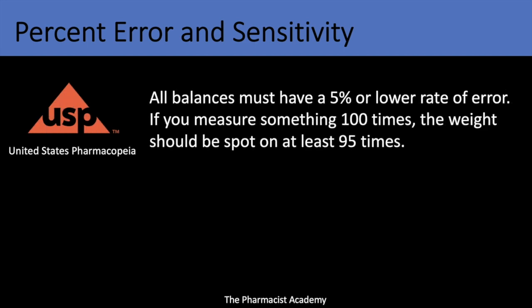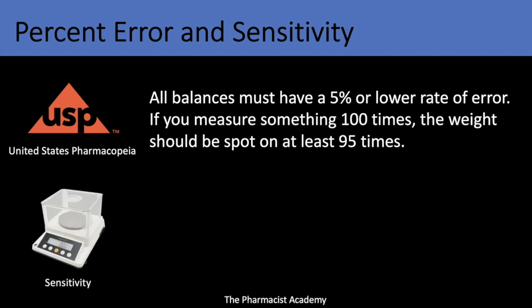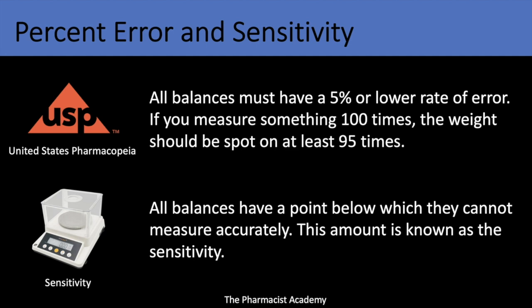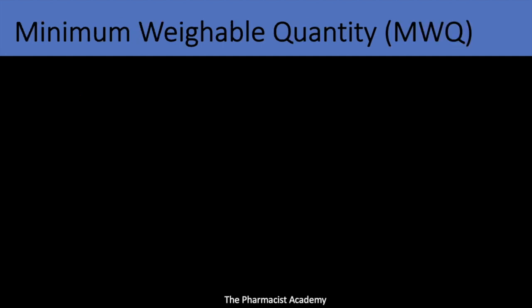According to the United States Pharmacopoeia, all balances must have a five percent or lower rate of error. For example, if you measure something a hundred times, the weight should be spot-on at least 95 times. All balances have a point below which they cannot measure accurately, and this is known as the sensitivity.